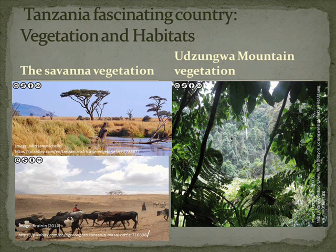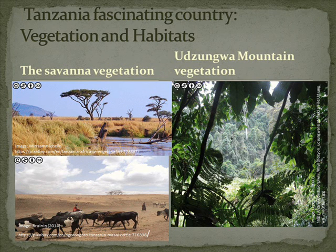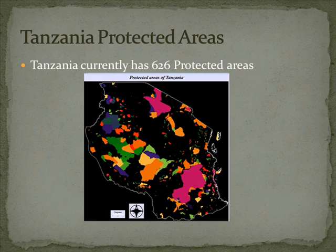The Serengeti National Park, in the north of Tanzania, covering an area of 14,763 kilometers squared, can easily be named the most famous terrestrial conservation area in the world. This reserve is famous for its wildlife migration of over one million wildebeest, accompanied by 200,000 zebras and 300,000 gazelles. It is also the oldest nature reserve in Tanzania.